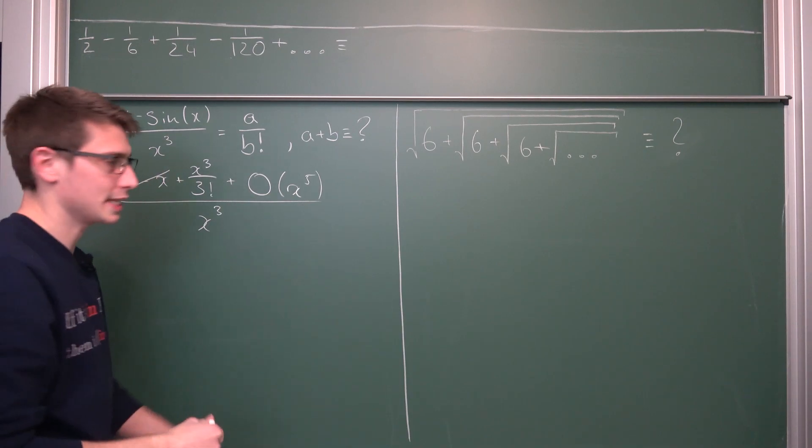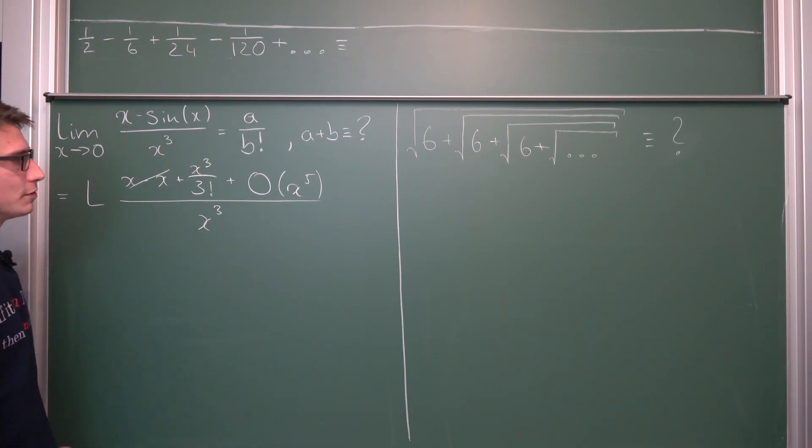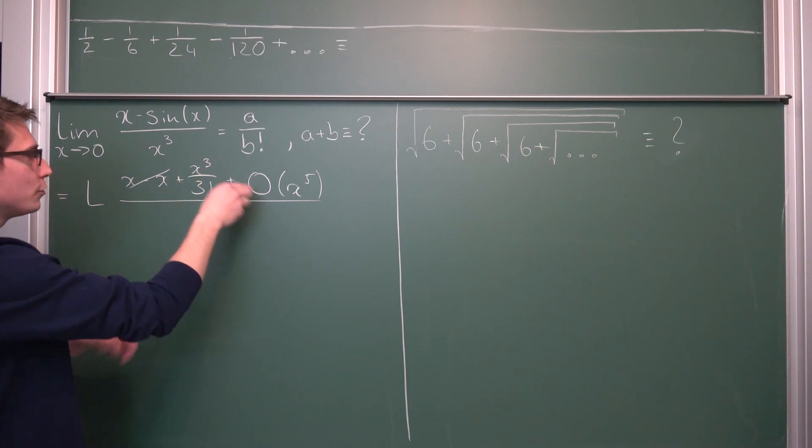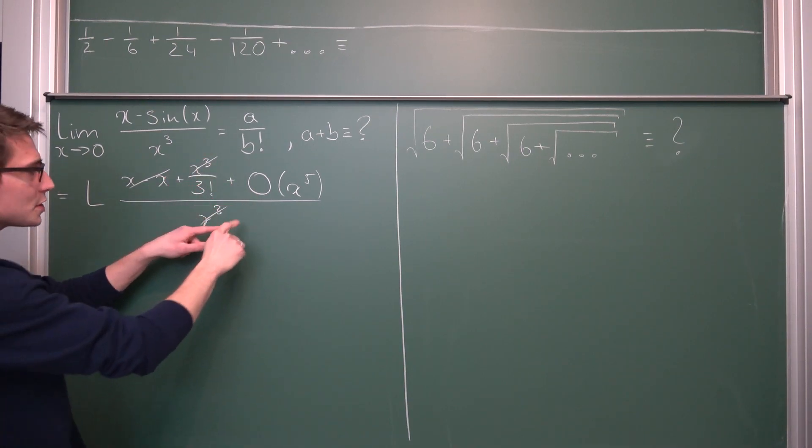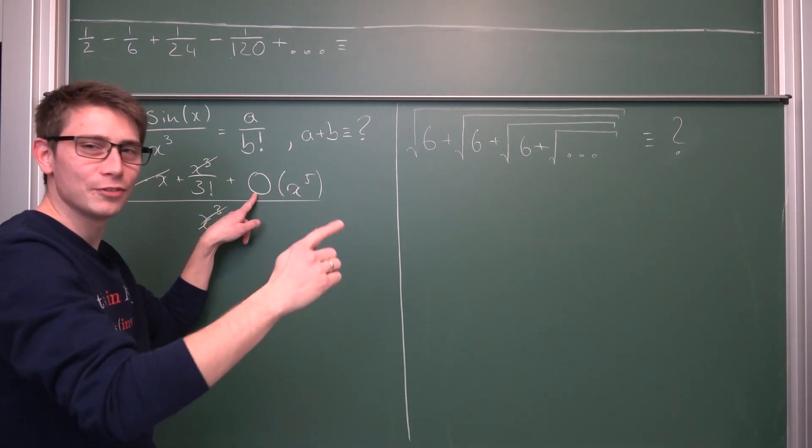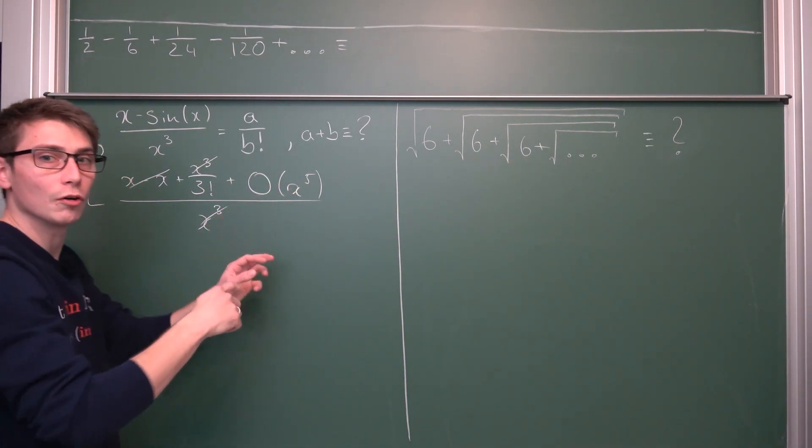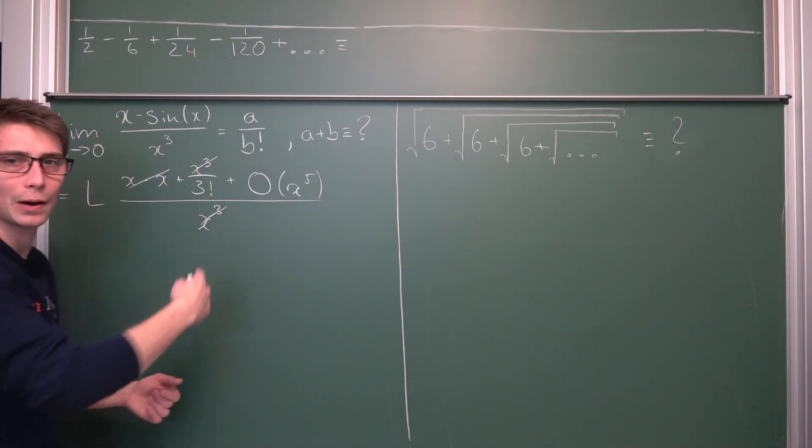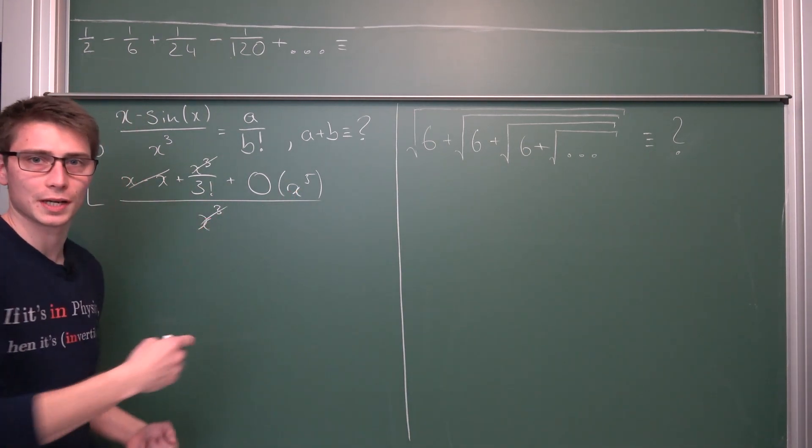And now everything is going to collapse extremely nicely. Then the x and negative x are going to cancel out. Then x to the third power and x to the third power are going to cancel out. Also we are going to have that O of x to the fifth power is going to turn into O of x squared.